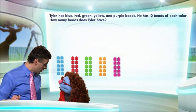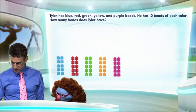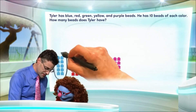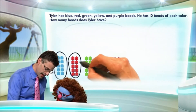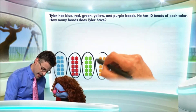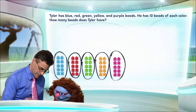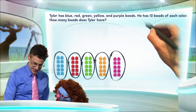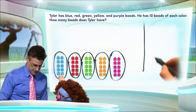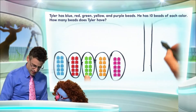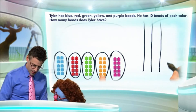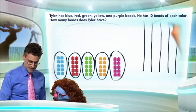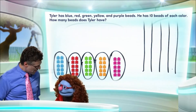Now we need to figure out how many he has in all. Each one of these is a group of 10, so I can lasso them — that's a group of 10, that's a group of 10, that's a group of 10, that's a group of 10, that's a group of 10. We can represent each group of 10 quickly: one for the first, one for the second, one for the third, one for the fourth, and one for the fifth. Each one of these stands for tens.